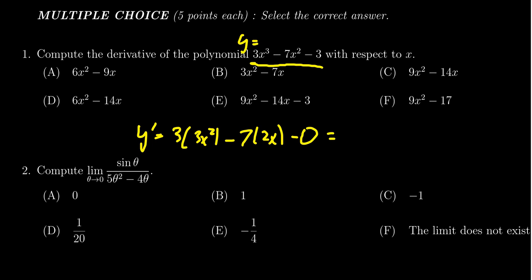This, of course, simplifies very quickly to be 9x squared minus 14x. And so we see the correct answer is C.